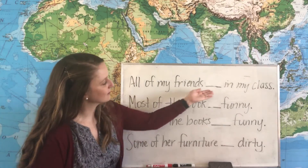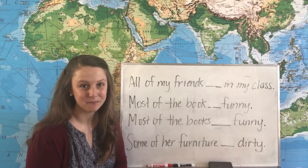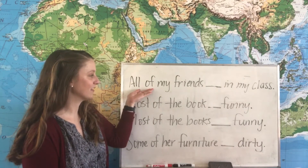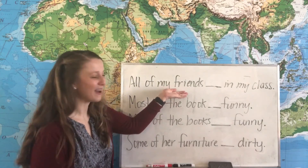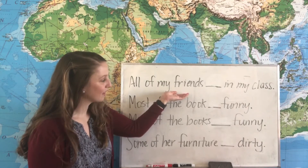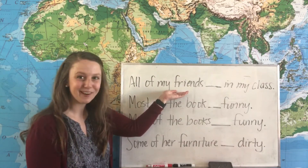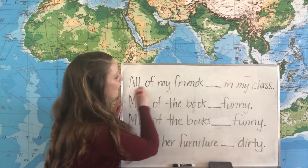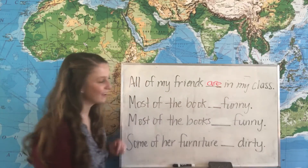Let's look at our first example: 'All of my friends in my class.' We need to put a be verb here. When we use a quantity expression like all of, we look at the noun — my friends — to see if it is singular or plural. In this case, my friends is plural, so we use the plural form of the be verb: 'All of my friends are in my class.'